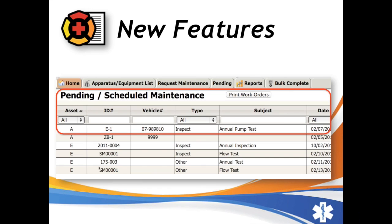Another new feature: those of you responsible for fleet or station management may have noticed that our pending maintenance page looks a little different. It now resembles the rest of our tables in the system. You can sort by different fields, type in part of the equipment ID, vehicle ID number, type of maintenance — inspect, replace, repair — or even part of the subject line. This allows those managing fleet and equipment maintenance a much faster way to drill down and see pending maintenance for particular apparatus or equipment types, making that whole part of the maintenance module much easier. There's more to come, including the ability to track station maintenance as well.